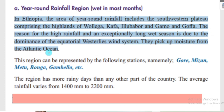That is why this region is known as the Year-Round Rainfall Region. This region can be represented by the following stations: Goree, which is found in Illubabor, and Mezan, also called Mezan-Teferi or Mezan-Aman.